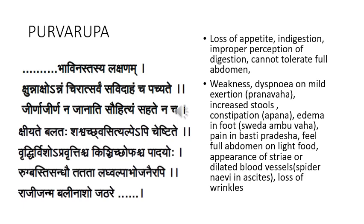Avruthir visho — increased stools in the body but not expelled out, apravruthischa — that is constipation, indicating vitiation of apanavayu. Then kinchith shofascha padaya — shofa means edema, accumulation of fluids indicating the ongoing pathology. The fluids getting vimargagamana start localizing between the tvak and mamsa — that is shofa, manifestation of shofa in the sharira, indicating the process is fairly happening.